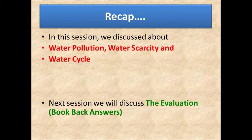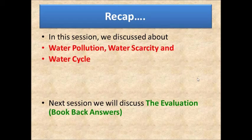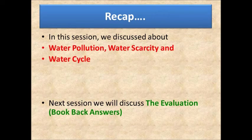We learned about the water cycle: water from various water bodies gets evaporated by the sun's heat, rises as vapor, cools down and condenses to form clouds. When too much water accumulates, clouds become heavy and water falls from the sky as rain, snow, hail, or dew. The water then collects in oceans, lakes, and ponds, and again gets evaporated, initiating the whole cycle over and over again.